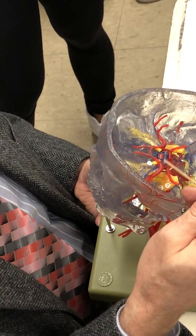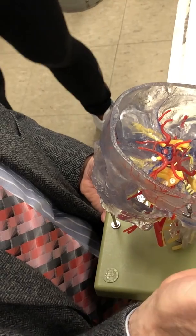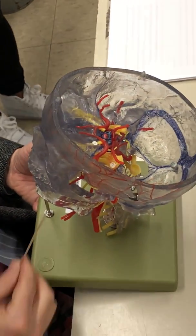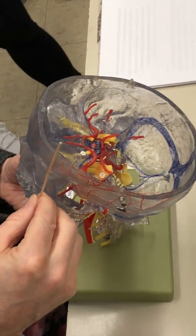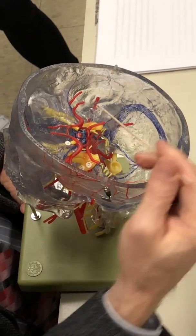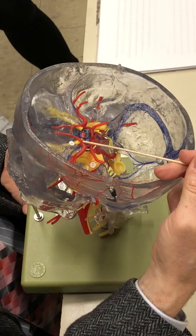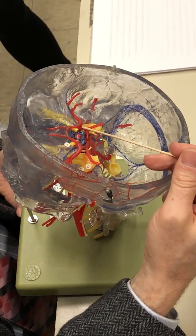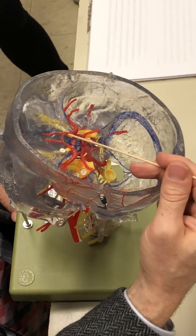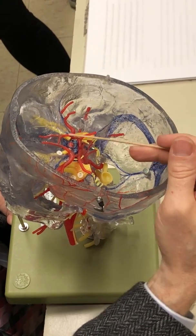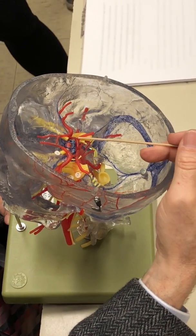Circle of Willis is also going to receive blood from the two internal carotids. Now you really can't see them because they're coming up through the carotid canal. Right below these two points is where the two internal carotids attach to the circle of Willis. So now the circle is supplied with blood and it's going to distribute blood to the cerebrum.